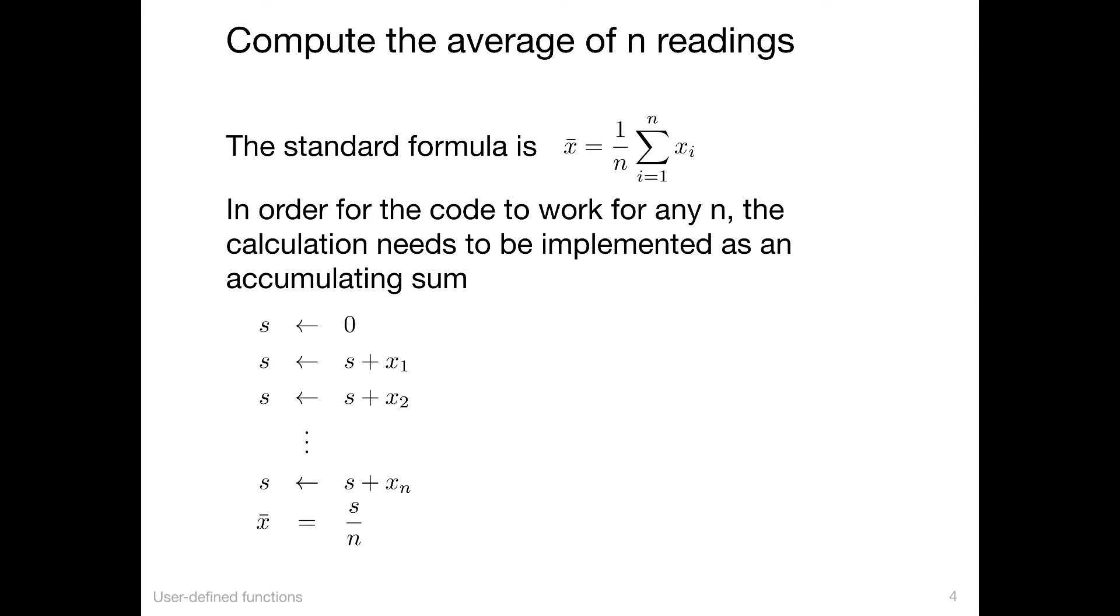Here's a symbolic representation of that. Let s be the sum, the variable that stores the sum. Initially, we set s to zero. The left arrow here suggests an operation. We have a value zero, and we assign it to s. In the next line, we assign s to be the prior value of s plus x1. The next line, the prior value of s plus x2, et cetera. So in this way, we accumulate the sum into s, divide by n, and we get the average.